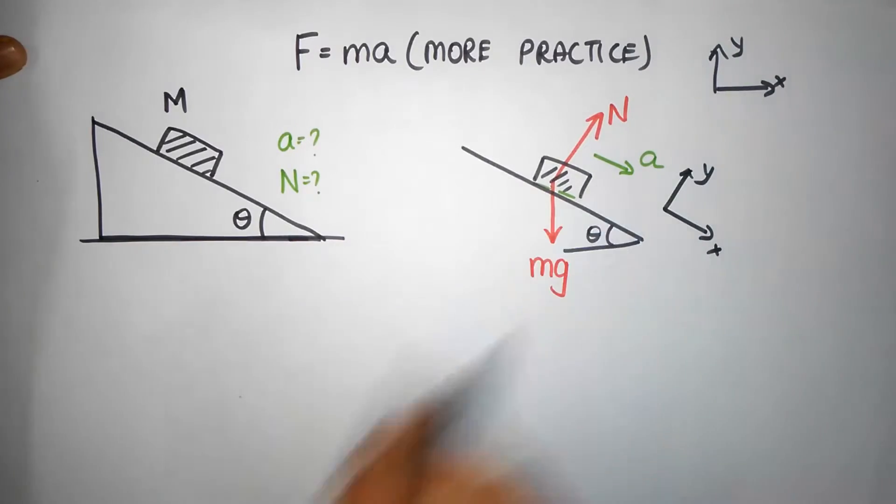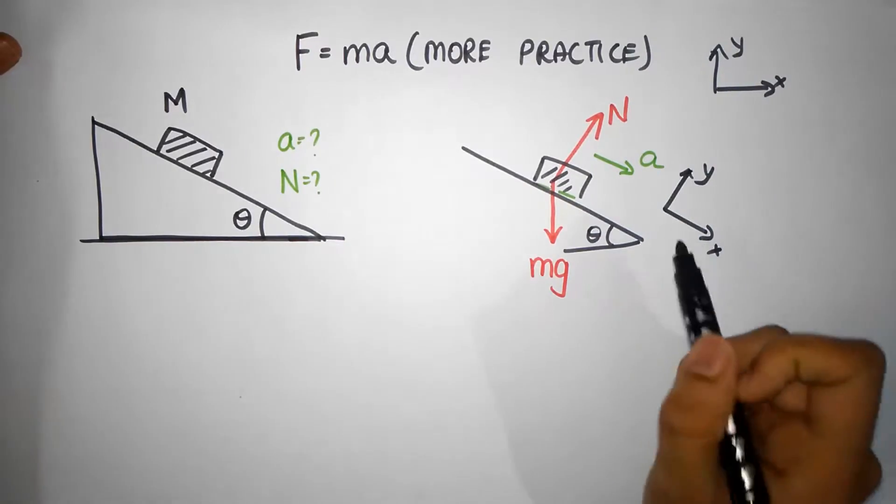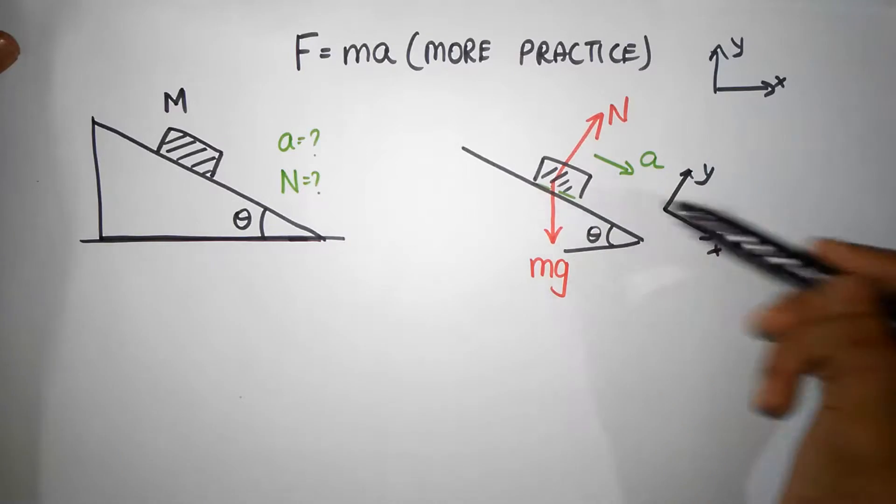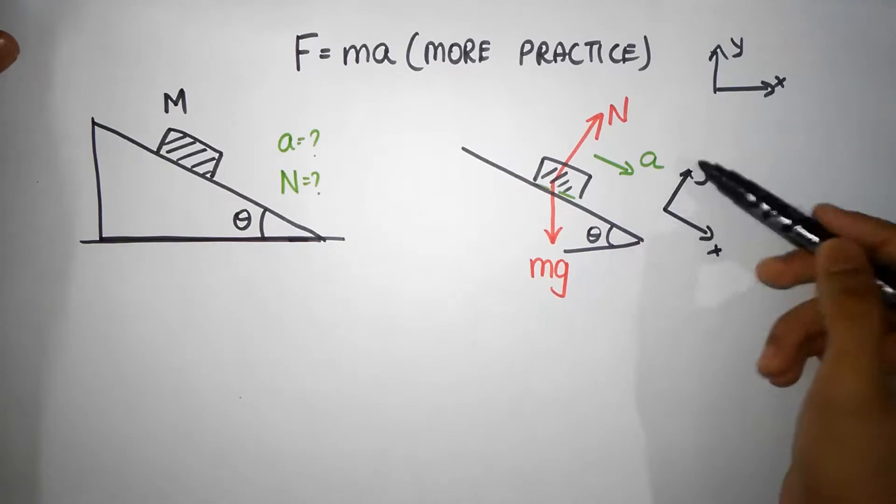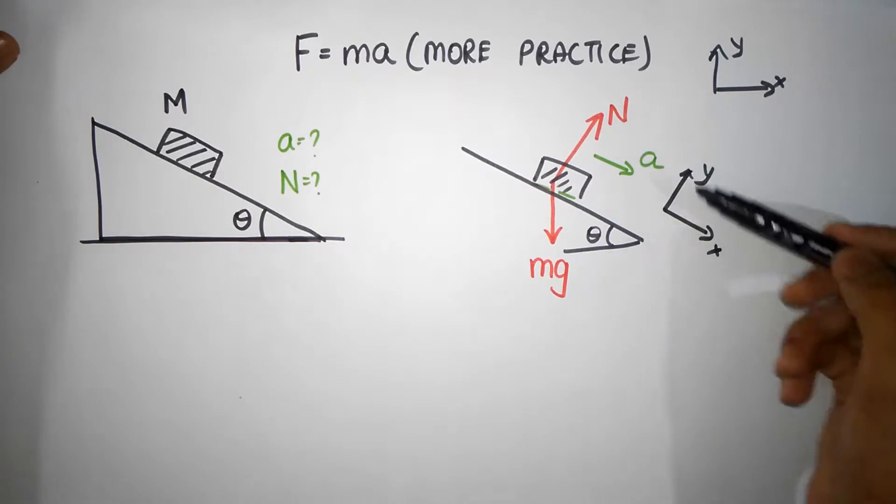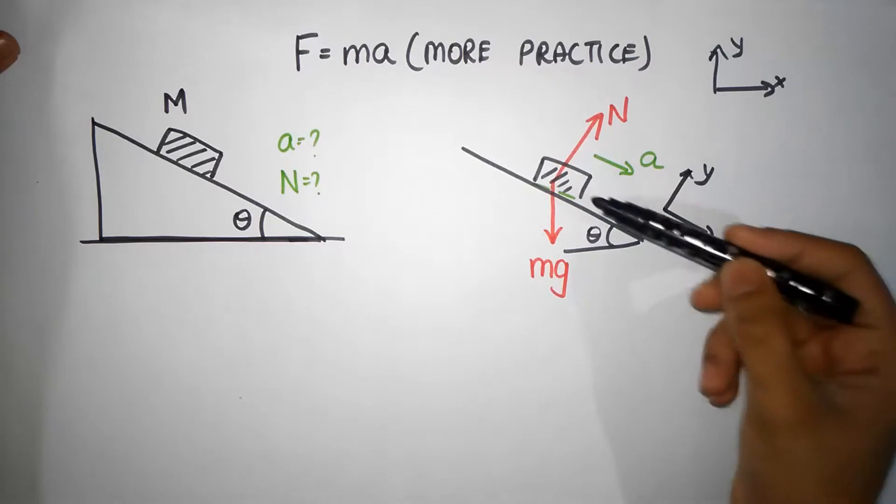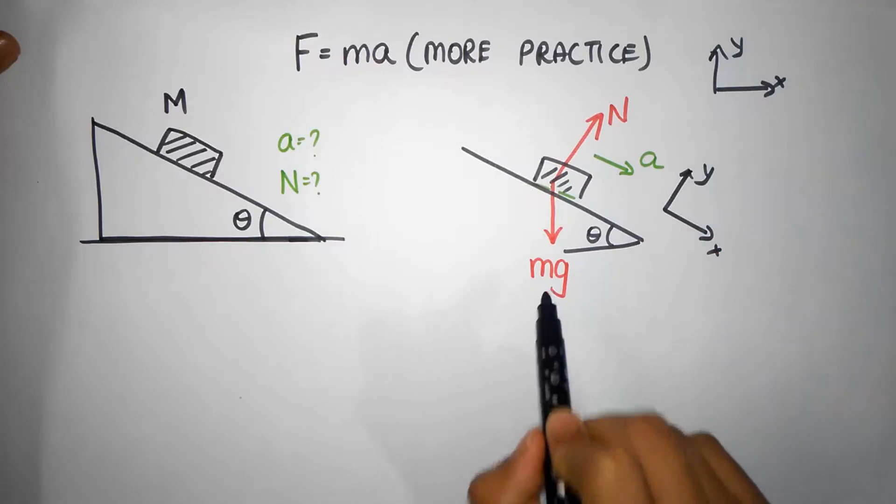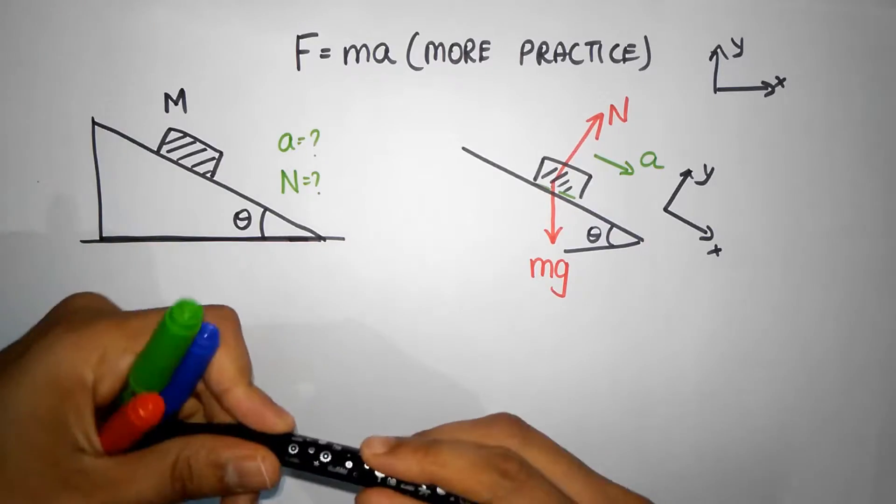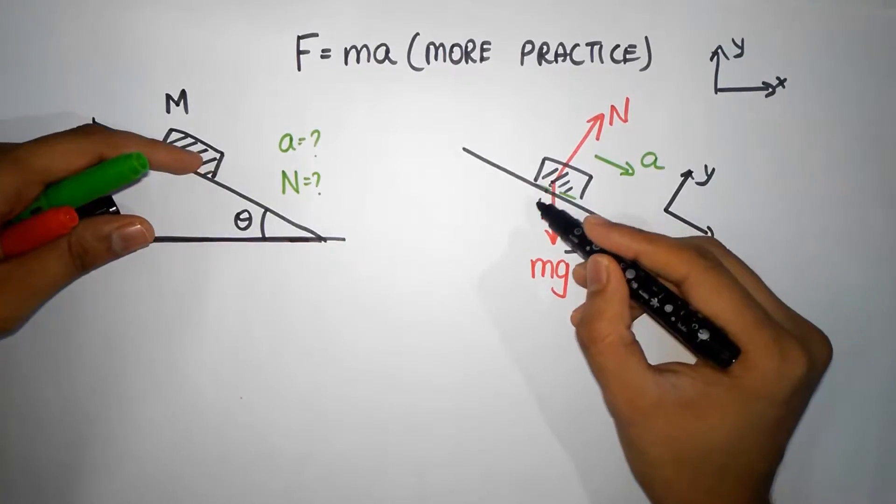So what I like to do is I'm going to take this direction as x and this direction is y. So this is x and this is y. So I'm going to call this as my horizontal and my vertical. So we're going to take all my forces and resolve them along the horizontal and vertical. Notice that normal is already along the y direction. The only force that I have to resolve now is mg.